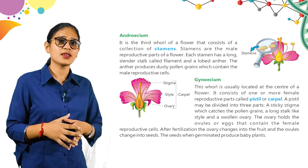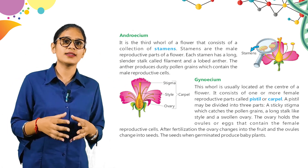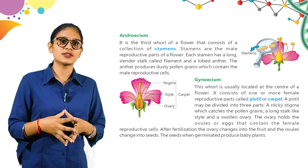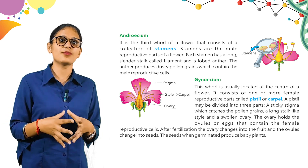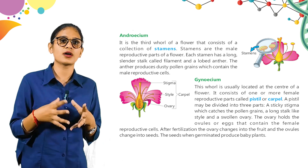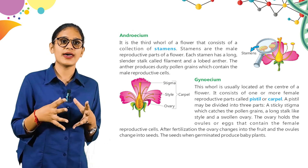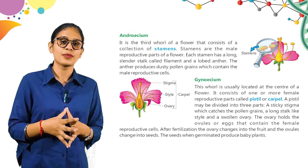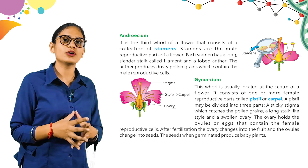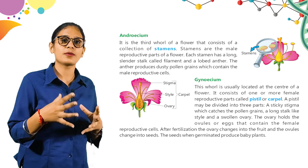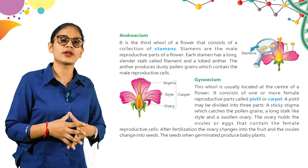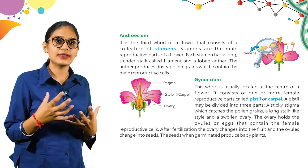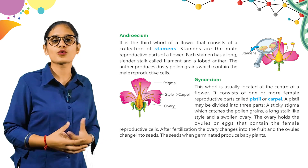Now, Androecium. It is the third whorl of a flower that consists of a collection of stamens. Stamens are the male reproductive parts of a flower. Each stamen has a long cylindrical stalk called a filament and a lobed anther. The anther produces dusty pollen grains which contain the male reproductive cell. So, Androecium consists of stamens — the male reproductive parts — which produce the pollen grains.